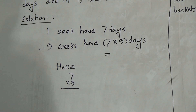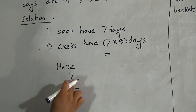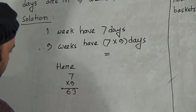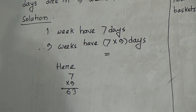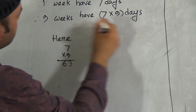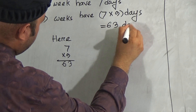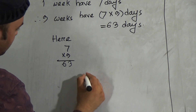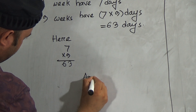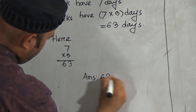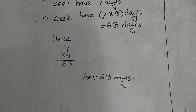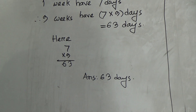You have to memorize the times table of nine. We know that nine sevens are sixty-three. So here, the answer is sixty-three days. How many days are in nine weeks? In nine weeks there are sixty-three days.